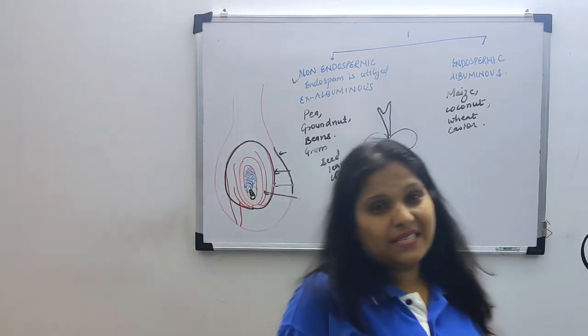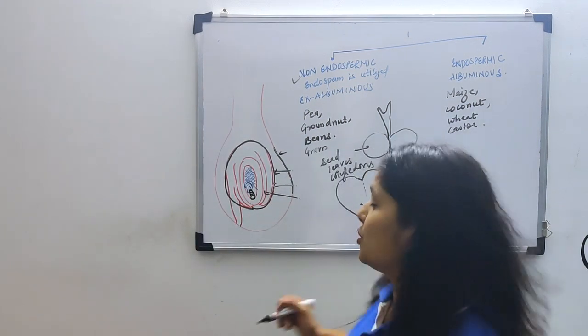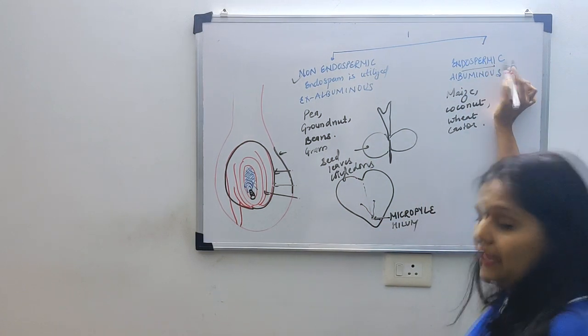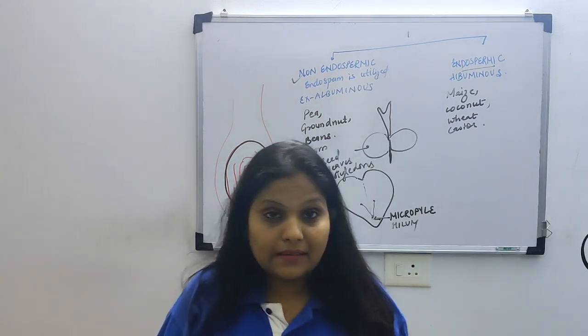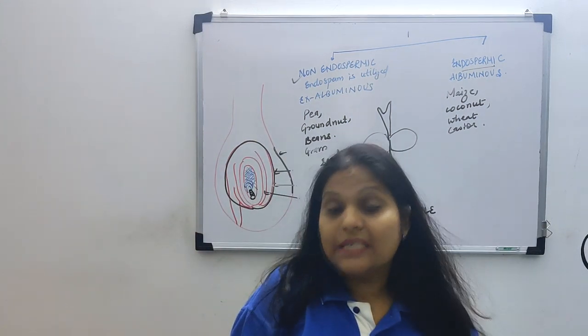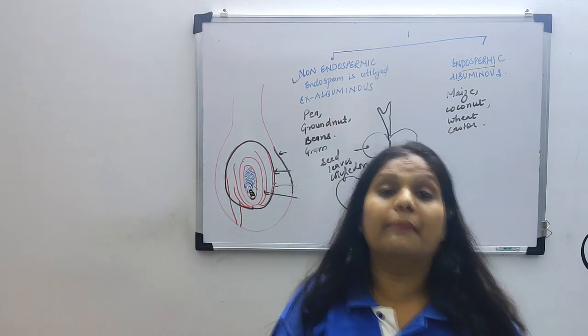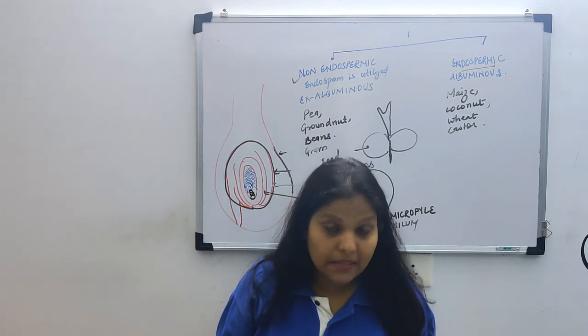In endospermic, all this is not needed because in endospermic, until the seed germinates, it has endosperm and can take nourishment from the coconut endosperm. This is about seeds. We have seen dicot seed, monocot seed, endospermic seed, non-endospermic seed.